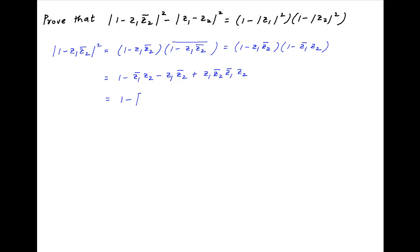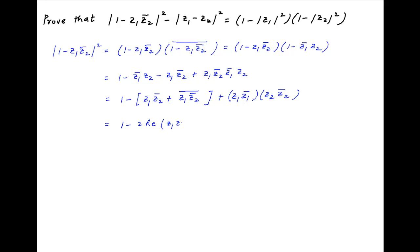This can be rearranged as 1 minus z1 times the conjugate of z2 plus the conjugate of z1 times the conjugate of z2, plus outside the brackets z1 times the conjugate of z1 times z2 times the conjugate of z2. Now, recalling that the sum of a complex number and its conjugate is equal to 2 times the real part of that complex number, this expression equals 1 minus 2 times the real part of z1 times the conjugate of z2, plus the absolute value of z1 squared times the absolute value of z2 squared. Let's call this Result 1.